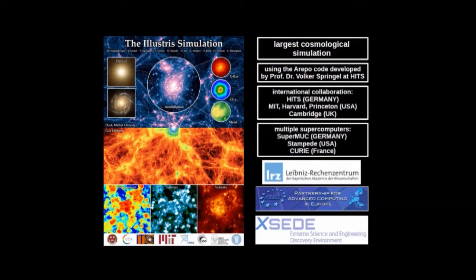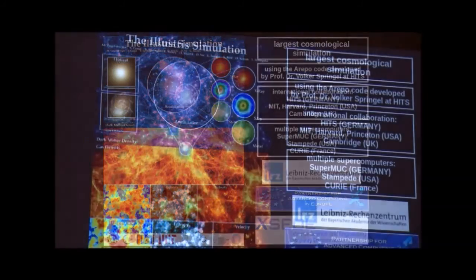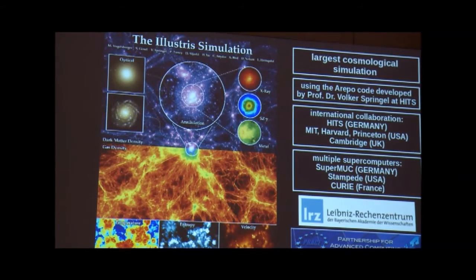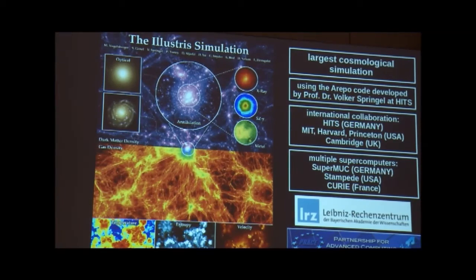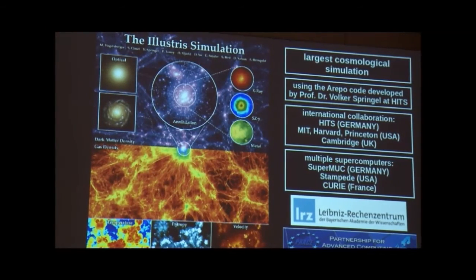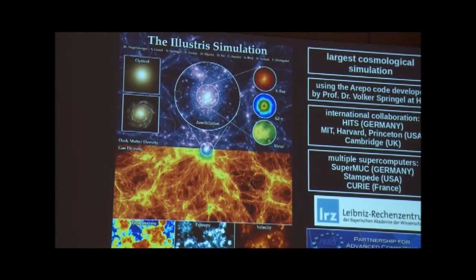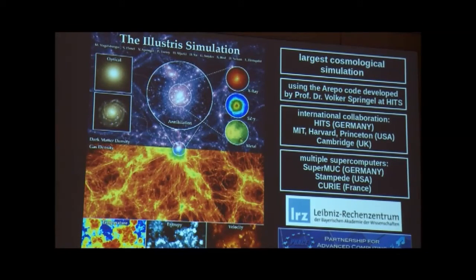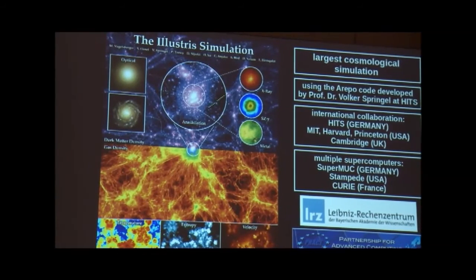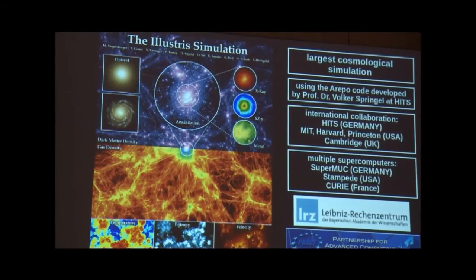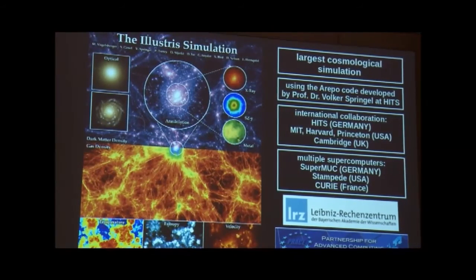To include stars you have to do much more work. We have actually done this together with Volker Springel here at HITZ and a couple of other researchers at MIT, Harvard, and Princeton in the US, and also in Cambridge in the UK. We ran a simulation called the Illustris simulation. At the moment, this is the largest cosmological simulation ever done — it includes dark matter, dark energy, stars, and galaxies, everything we know, all in one big simulation. The main calculation was actually done here in Germany on the supercomputer, with a large fraction also done in France at the CURIE machine, and some contribution from the Stampede supercomputer in the US.